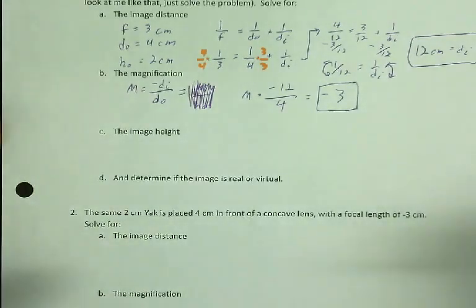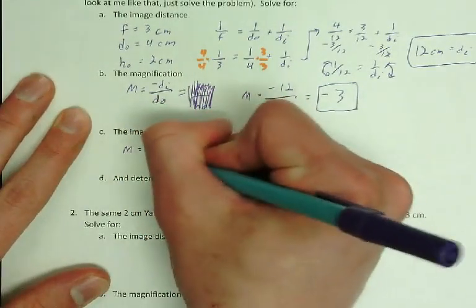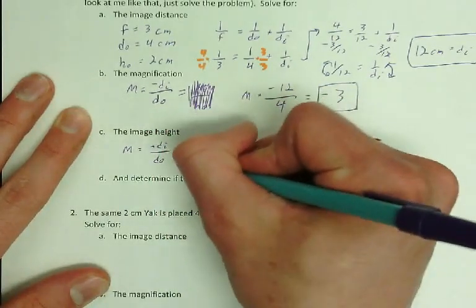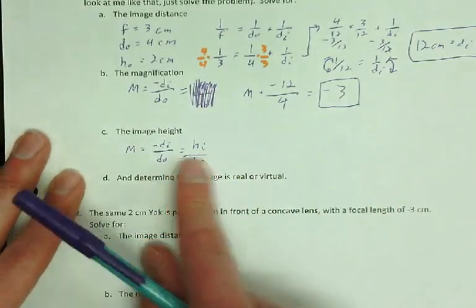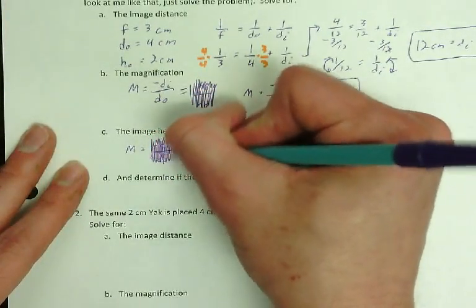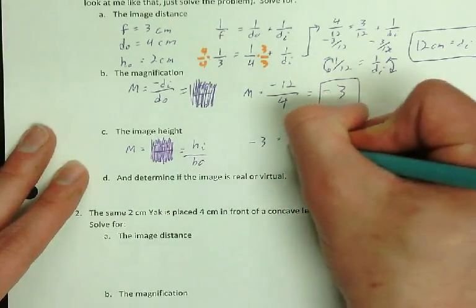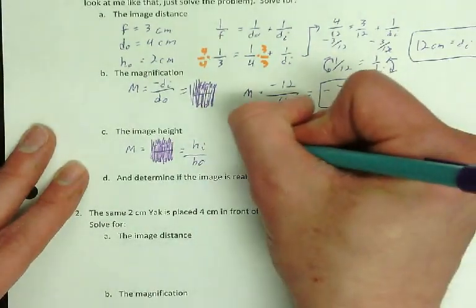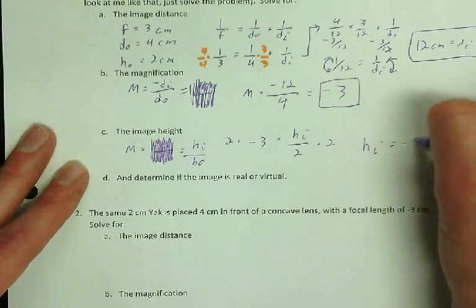Image height, same equation. So I know what M is now, it's negative 3. So I don't need the DODI business. So I'm just going to get rid of it. And I'm going to get negative 3 equals HI over HO, which is 2. Multiply both sides by 2, and you get HI equals negative 6.